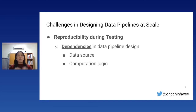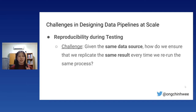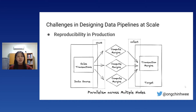The main challenge is that when designing for reproducibility, we have two key dependencies: the data source and the computation logic. Both affect what we get at the target. The core question is: given the same data source, how do we ensure we replicate the same result every time we rerun the process — whether now or two months later?